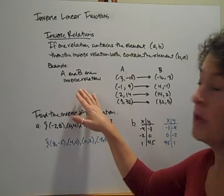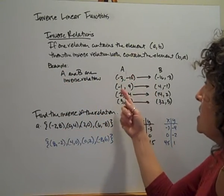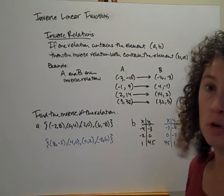So for example, A and B are inverse relations. So here's A, got (-3,-16), (-1,4), (2,14), and (5,32).